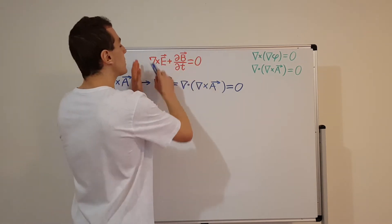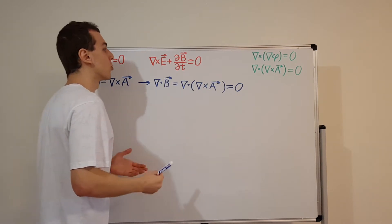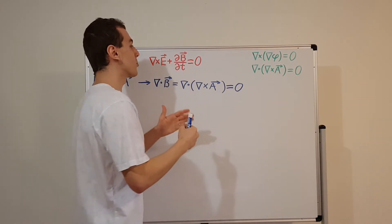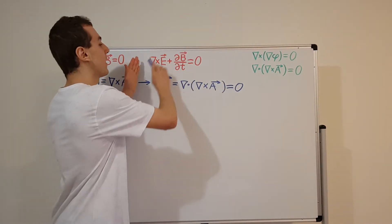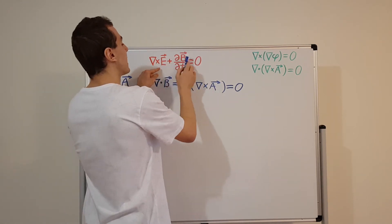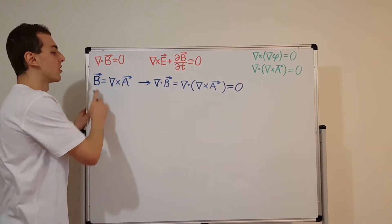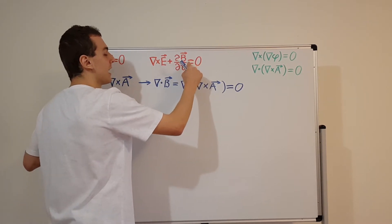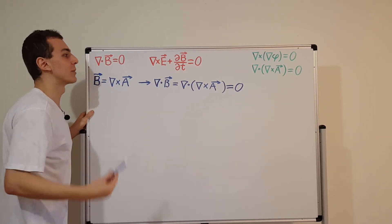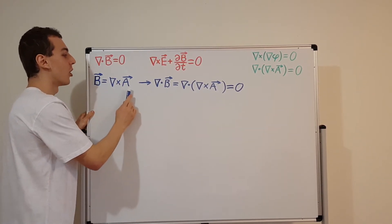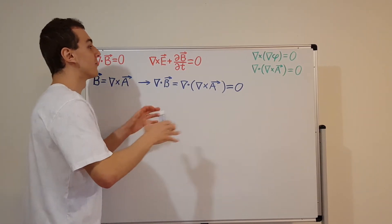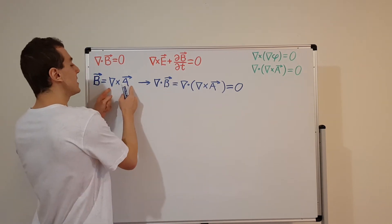Now we need to work with Faraday's law of induction, which is another homogeneous Maxwell's equation with no source term. The minus sign on the right-hand side relates to Lenz's law and indicates the direction. I'm going to substitute our new definition of B into Faraday's law and manipulate it to isolate the electric field, giving us an expression for E in terms of the scalar and vector potentials.